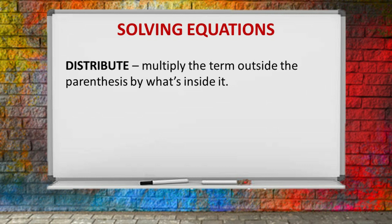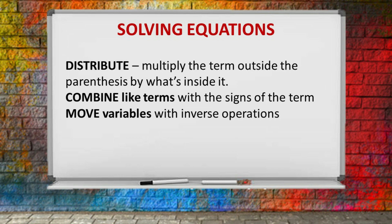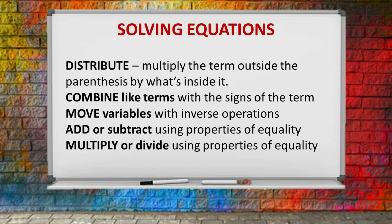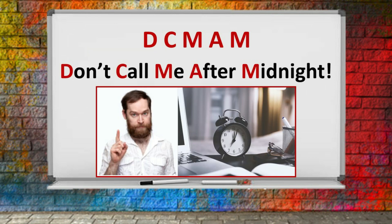Now let's get a little bit more sophisticated and talk about solving equations. Here's the format: Distribute — multiply the term outside the parentheses by what's inside it. Then combine like terms with the signs of that term. Then move the variables with inverse operations. Add or subtract using properties of equality. And lastly, multiply or divide using properties of equality. Using the initials D, C, M, A, M — "Don't call me after midnight." You might imagine trying to call your math professor and he says, "Don't call me after midnight." It's not my intention to teach you how to solve equations — only to show you how to recall the system for doing it.